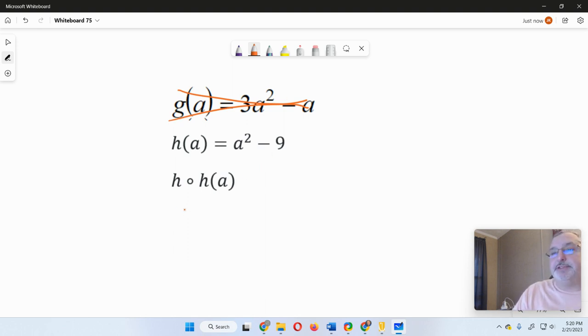Then we're just going to substitute h of h of a. So again, here's a squared minus 9. And what we're going to do is we're going to take a, and we're going to substitute it into that function again. So we've got a squared minus 9 squared minus 9. And so now we just have to simplify this.